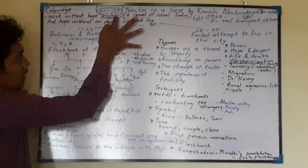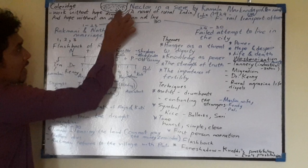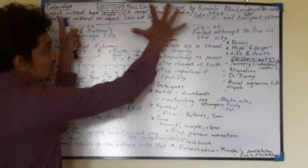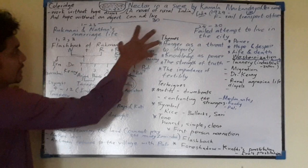Indian society is full of starvation, full of droughts, no happy life. So they always have despair. The title is very significant for the subtitle — a novel of rural India — which captures the themes of misery and sufferings.